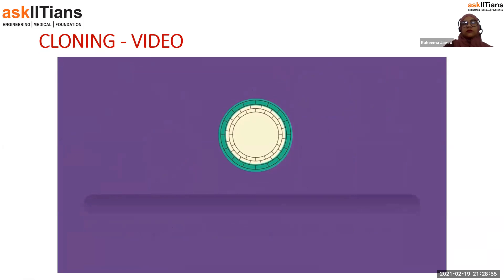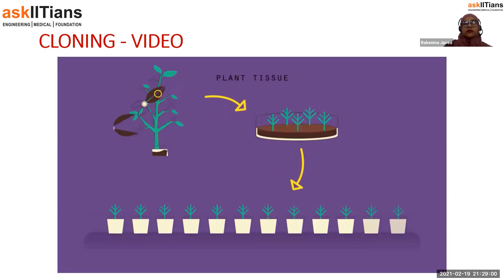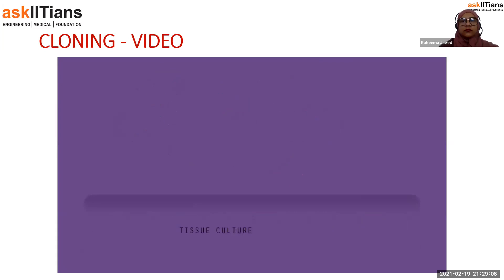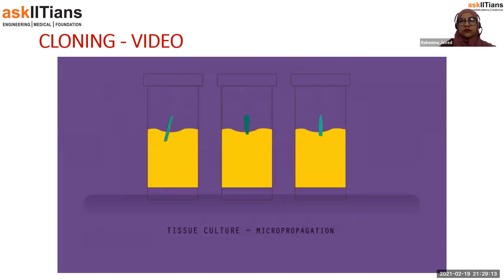Shoots are cut from the parent plant, dipped in hormone rooting powder, and placed into a pot of soil. The hormone rooting powder encourages the cutting to start growing roots, and soon a whole new plant — identical to the original — will have grown. This works because the shoots contain stem cells which can differentiate to form different cells and tissues.